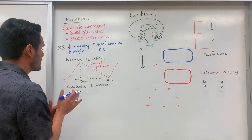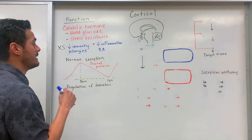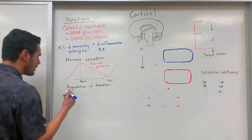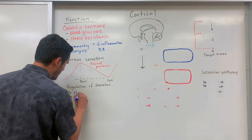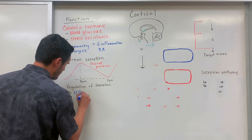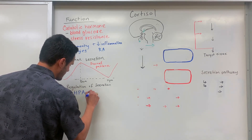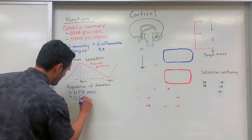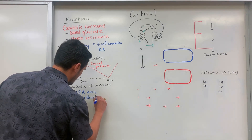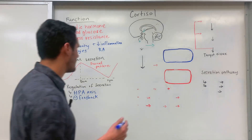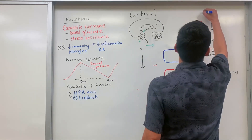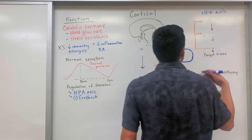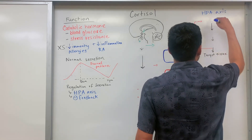The next thing is the regulation of the secretion — how do we regulate the release of cortisol? Cortisol utilizes the hypothalamus-pituitary-adrenal axis and it utilizes what's known as a negative feedback mechanism. Let's look at the HPA axis and we're already familiar with how this pathway works.